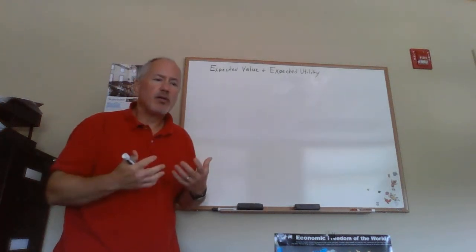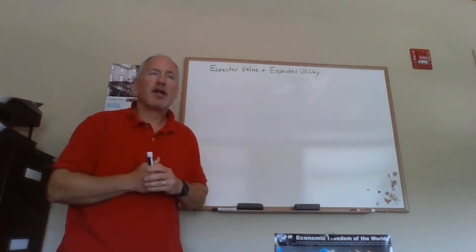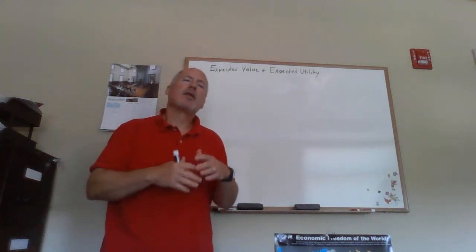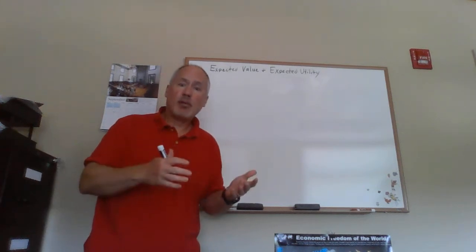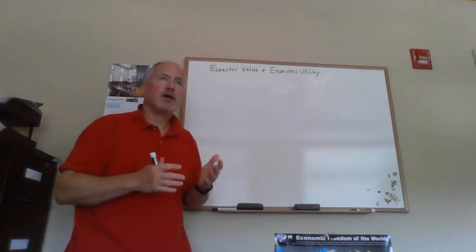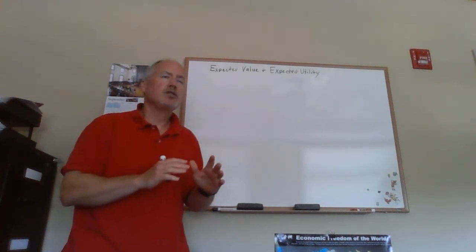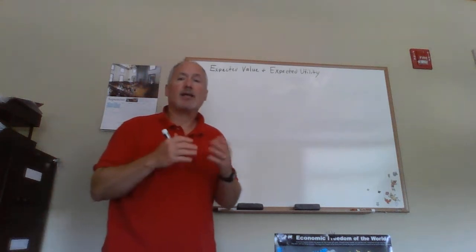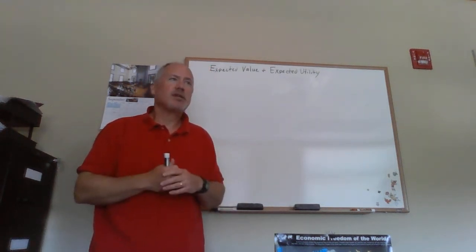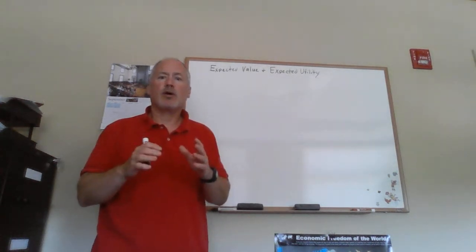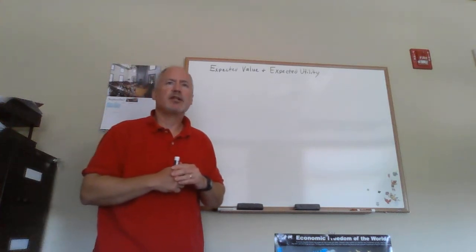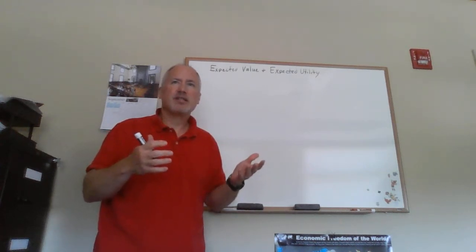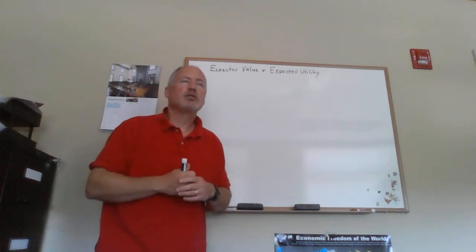When we go ahead to model this, we assume we're going to have gambles or lotteries. We'll use this term generically to refer to any situation where there's more than one possible outcome with probabilities associated with them. For this class, we're focusing exclusively on money amounts as outcomes, and we'll keep it simple with two or three outcomes to illustrate what's involved with a gamble or lottery as opposed to a deterministic choice.